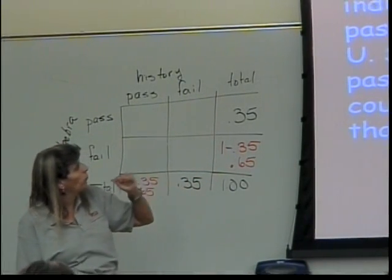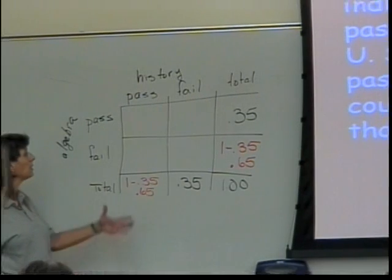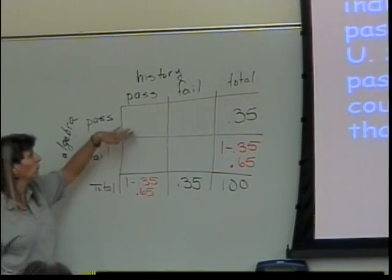That tells me that the probability of passing at least one course is 0.80. Where is passing at least one course in those four squares?